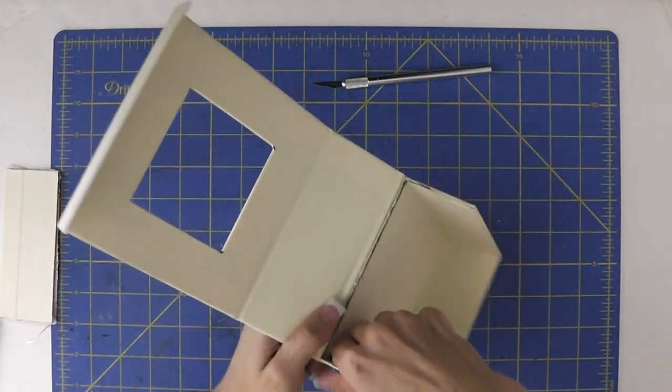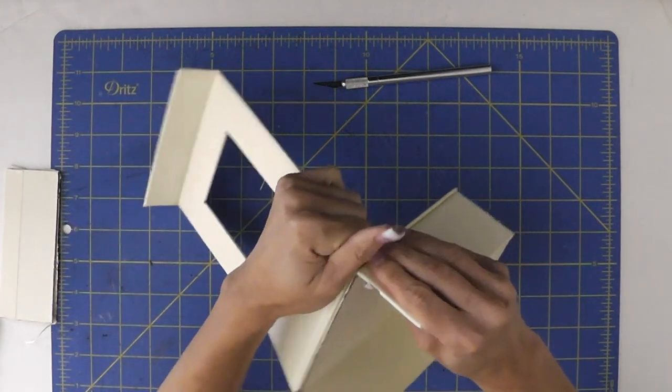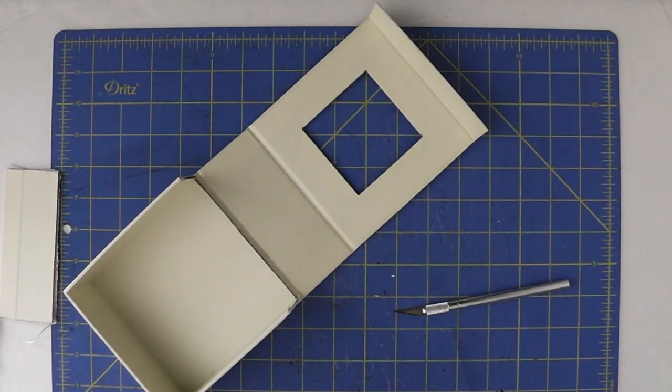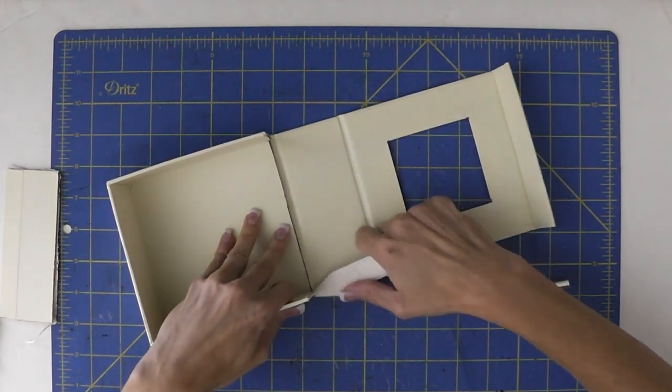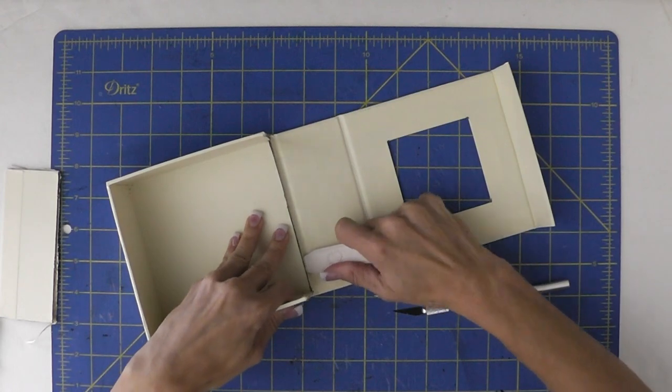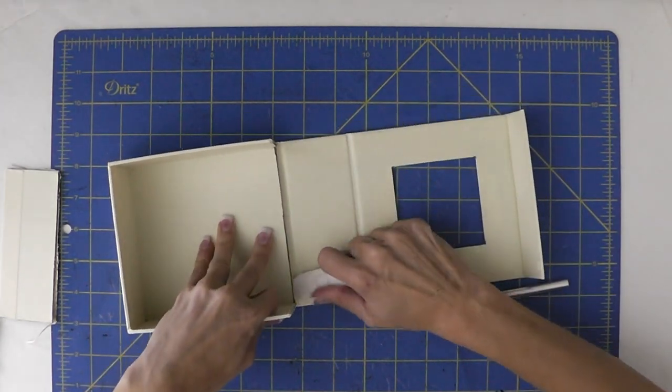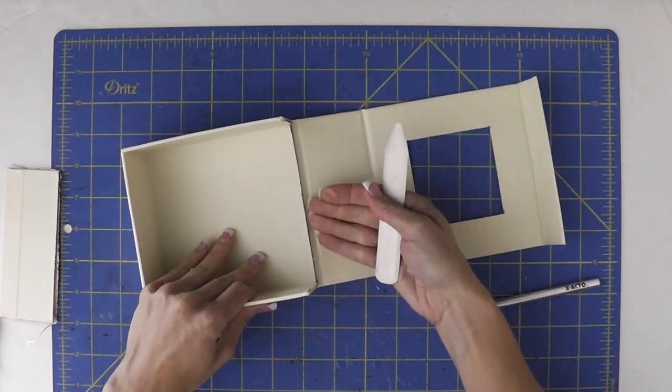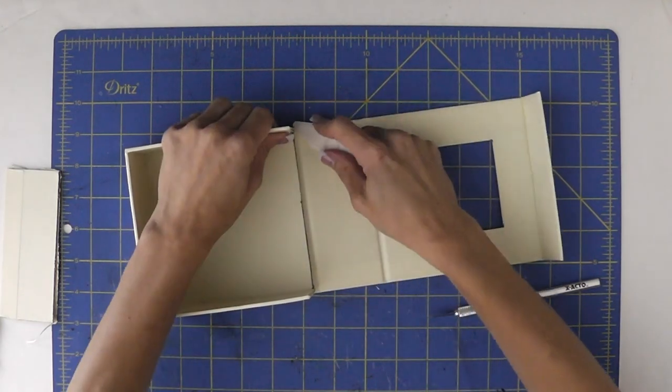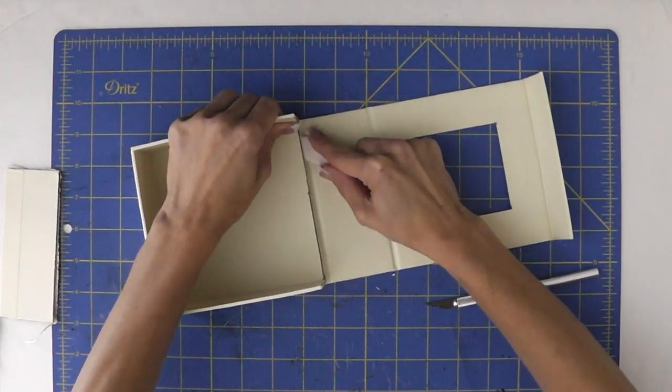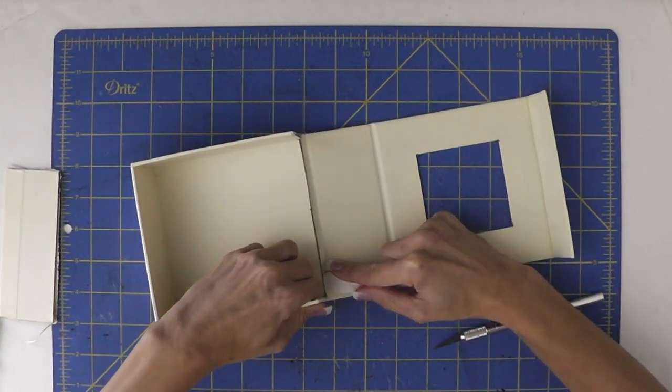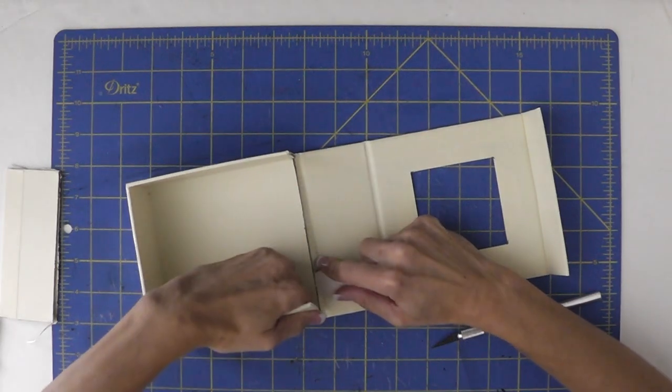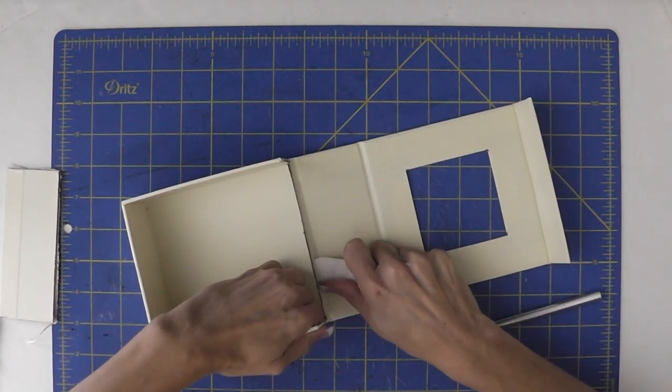So what I like to do is very carefully, sometimes it cooperates and comes up apart easier, sometimes it's difficult, and I like to separate it a little bit. And this is completely optional. You can use washi tape and just cover it up or anything similar to that.